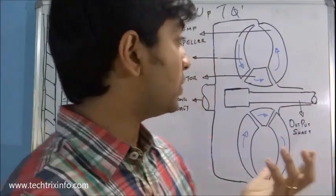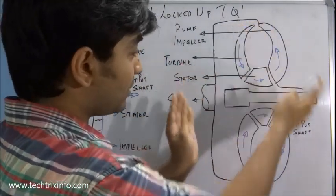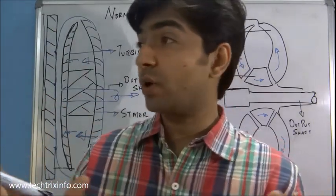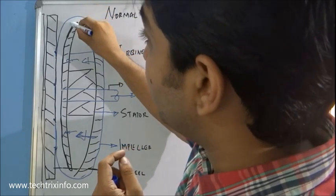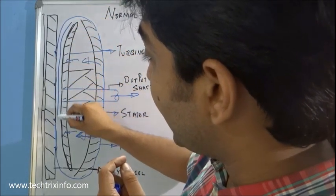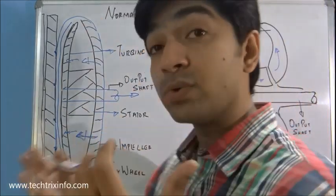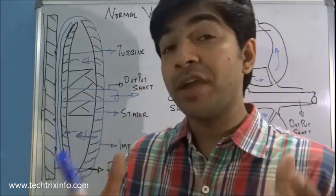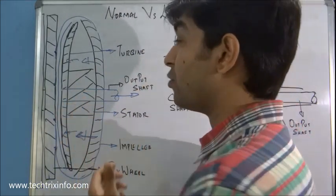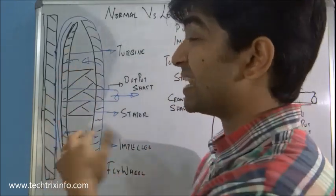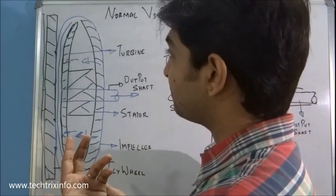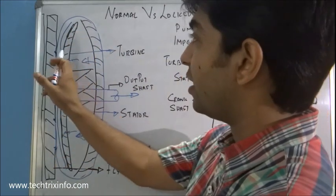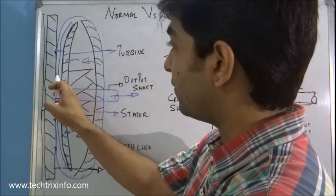In a locked-up torque converter, as seen in the side view, the normal torque converter has no mechanical linkage. But in a locked-up torque converter, we have a lock-up clutch that comes in between the casing and the turbine. At cruising speeds or at very high speeds, there is still slippage in a normal torque converter, which results in low efficiency due to impelling losses and heat generation. To avoid that, a locked-up torque converter uses a lock-up clutch. This clutch locks the casing with the turbine.